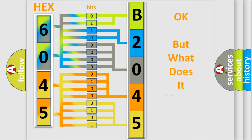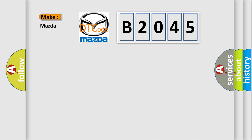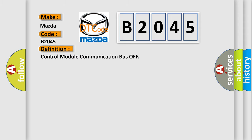The number itself does not make sense if we cannot assign information about what it actually expresses. So, what does the diagnostic trouble code B2045 interpret specifically for Mazda car manufacturers? The basic definition is: Control module communication bus off. Here is a short description of this DTC code.